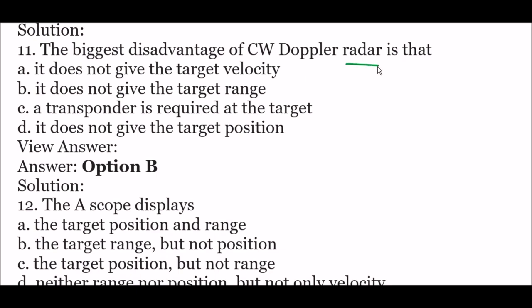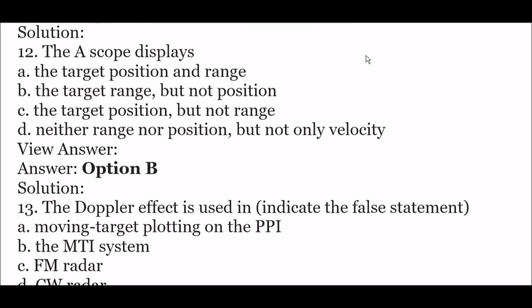Next question: the biggest disadvantage of CW Doppler radar is that — option A: it does not give the target velocity, option B: it does not give the target range, option C: a transponder is required at the target, option D: it does not give the target position. The right answer is option B — it does not give the target range.